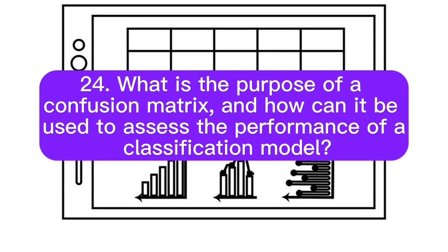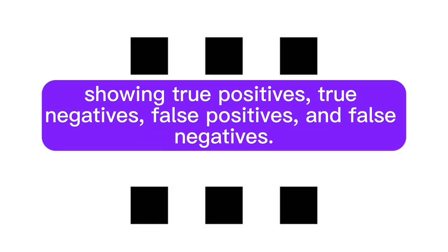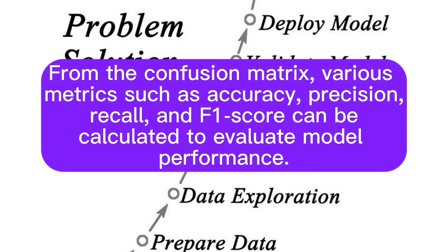Question 24: What is the purpose of a confusion matrix, and how can it be used to assess the performance of a classification model? Answer: A confusion matrix is a table that summarizes the results of a classification model, showing true positives, true negatives, false positives, and false negatives. From the confusion matrix, various metrics such as accuracy, precision, recall, and F1 score can be calculated to evaluate model performance.